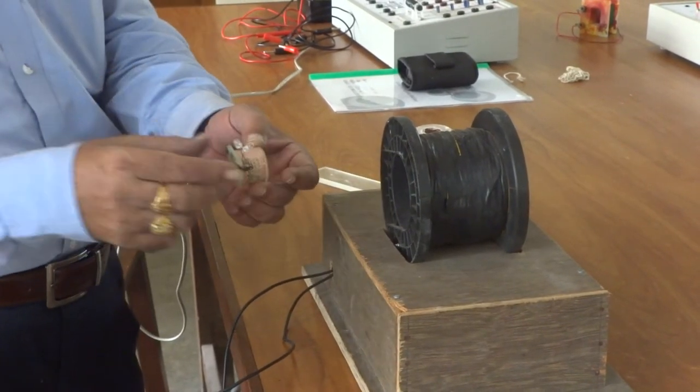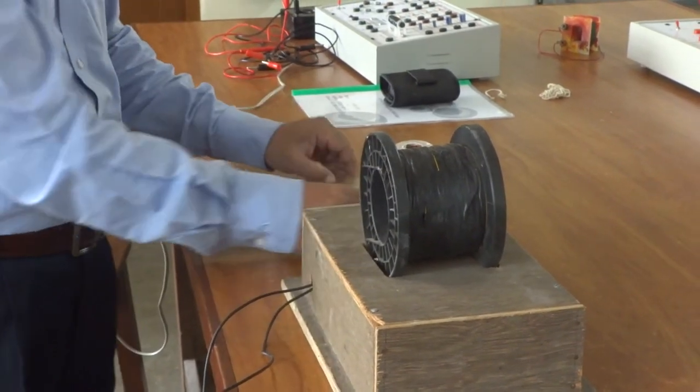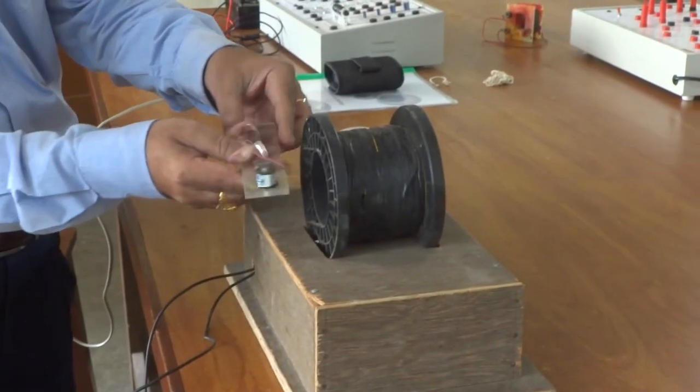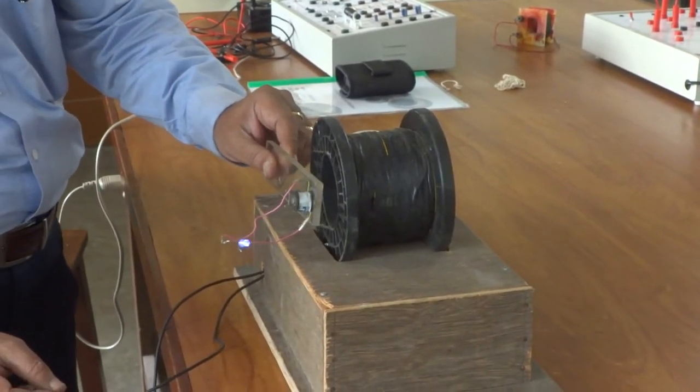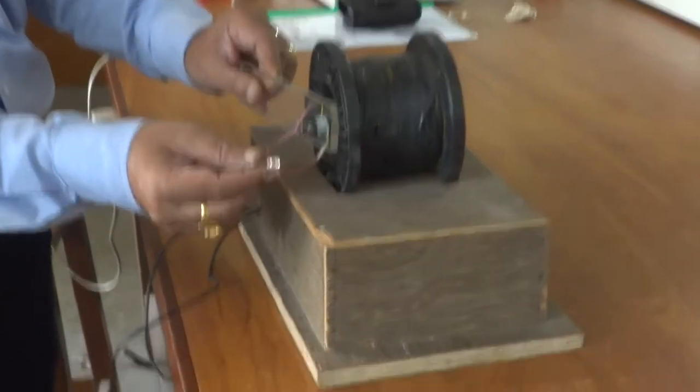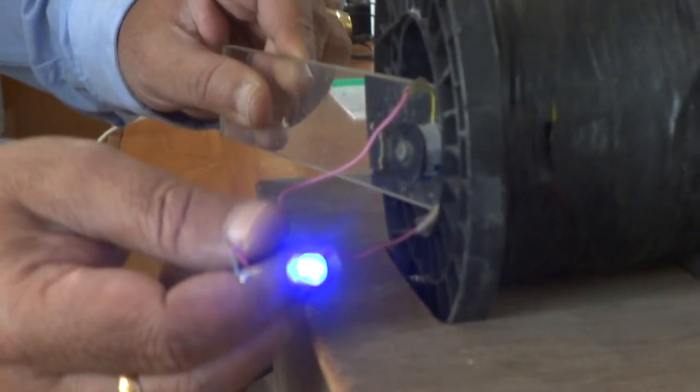Now by inducing the secondary coil, the LED that is attached will glow. Now let's verify. You can see that the secondary coil is nowhere in contact with any power supply but still you are able to see the light.